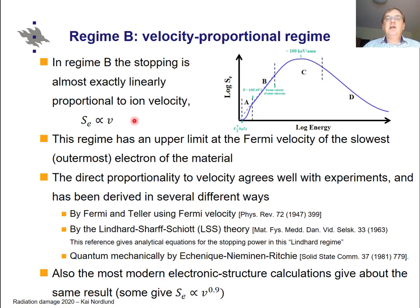In this regime the electronic stopping power has a simple functional form in principle: the stopping power is proportional to the velocity. This has been observed in many experiments and has been derived in several different ways — by Fermi and Teller using a Fermi velocity argument, and also by the LSS theory, where nowadays people often call this the Lindhard regime for stopping, because the LSS papers give an analytical equation for the stopping in this regime.